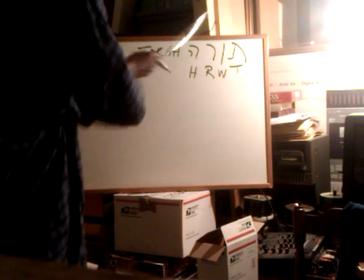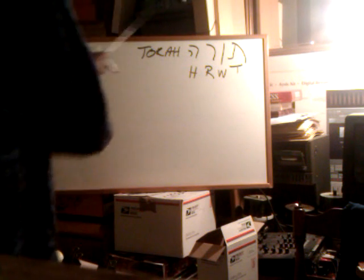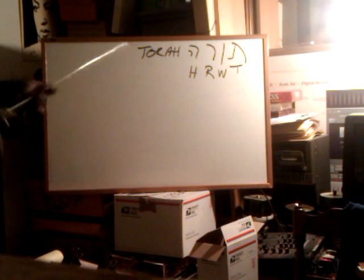And as you can see, let's get the pointer out so you can see it. This is a T, this is the W, this is the R, this is the H. So therefore it's written T-O-R-A-H, Torah.